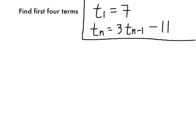This example will work pretty similarly, but we do have a slightly more complicated recursive definition. We're still trying to find the first four terms. t₁ is given to us, that's 7.